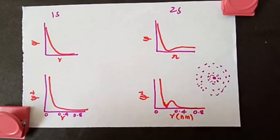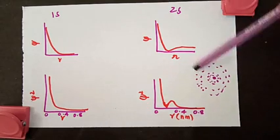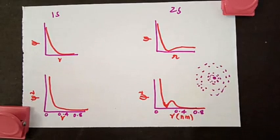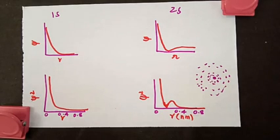ψ² gives the probability of finding the electron around the nucleus. There are a large number of orbitals like 1s and 2s. We distinguish these orbitals quantitatively based on their size, shape, and orientation using the quantum numbers: the principal quantum number, azimuthal quantum number, magnetic quantum number, and spin quantum number.